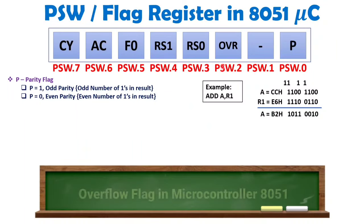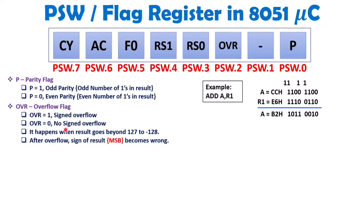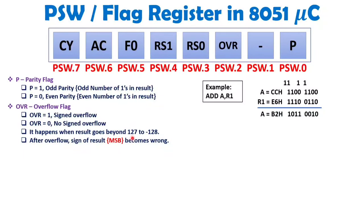Next is the OV overflow flag. The overflow flag is used with signed operations only — remember this. Overflow means the answer cannot be stored within the range of a signed number. For an 8-bit microcontroller like the 8051, the signed number range is 127 to -128. If the answer goes beyond this range, overflow equals 1.